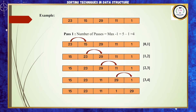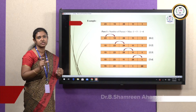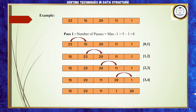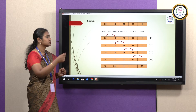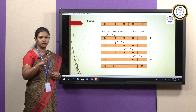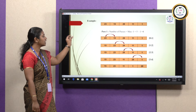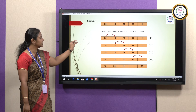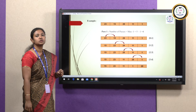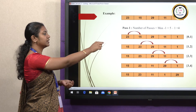Let us now see the example with elements 23, 15, 29, 11 and 1 — an unsorted list. The number of passes is calculated as the maximum number of elements minus 1. Since we have 5 elements, we have 5 minus 1, giving us 4 total passes. In the first pass, comparing index 0 and index 1, we have 23 and 15. Since 15 is smaller than 23, we swap their positions. The elements become 15, 23, 29, 11 and 1.